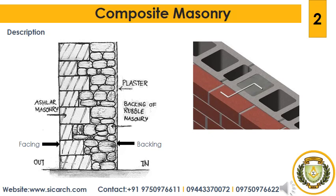Masonry is commonly used for walls and buildings. Brick and concrete block are the most common types of masonry in use in industrialized nations and may be either weight-bearing or a veneer. Concrete blocks, especially those with hollow cores, offer various possibilities in masonry construction. They generally provide great compressive strength and are best suited to structures with light transverse loading when the cores remain unified. Filling some or all the cores with concrete or steel-reinforced concrete offers much greater tensile and lateral strength.